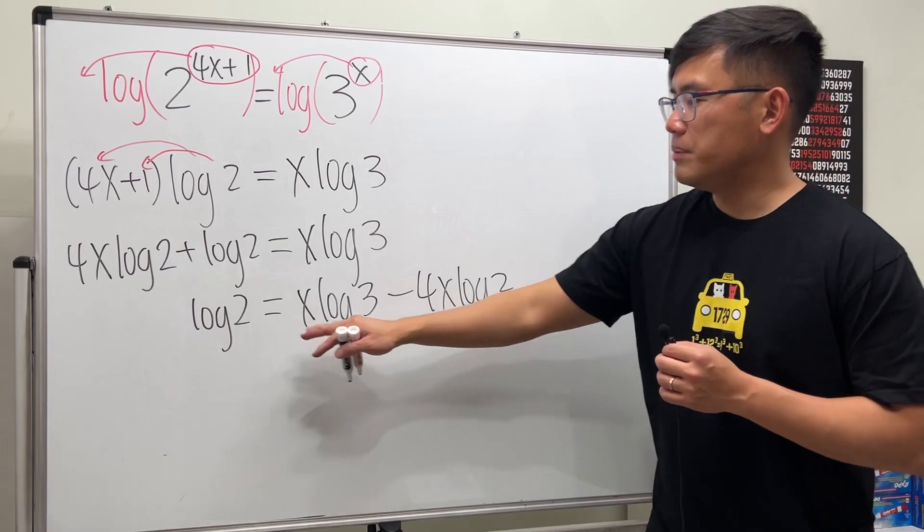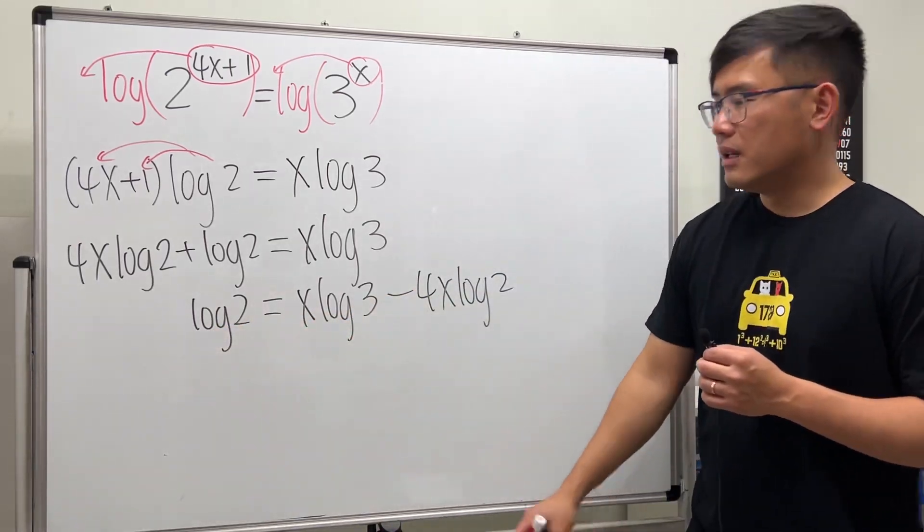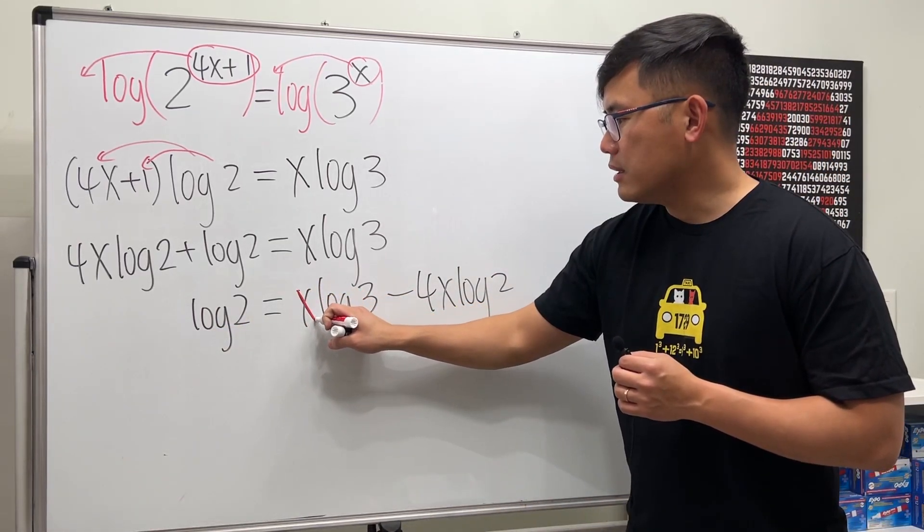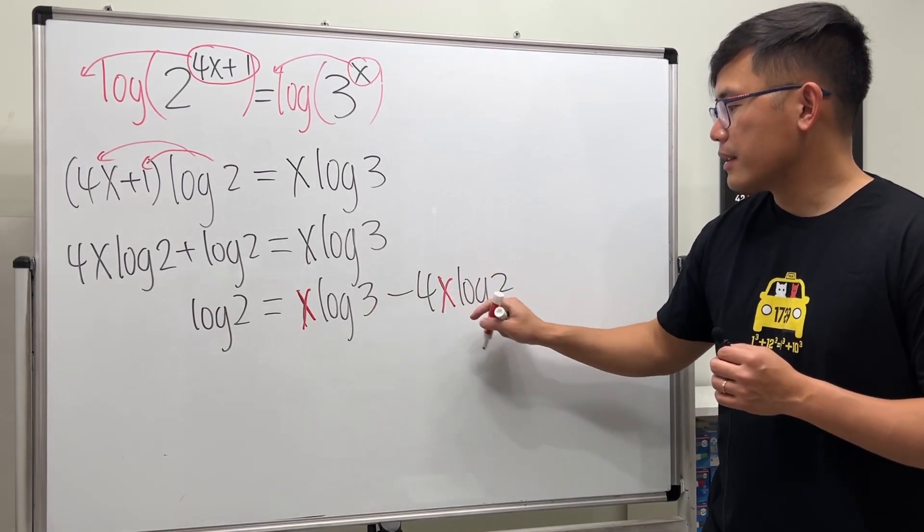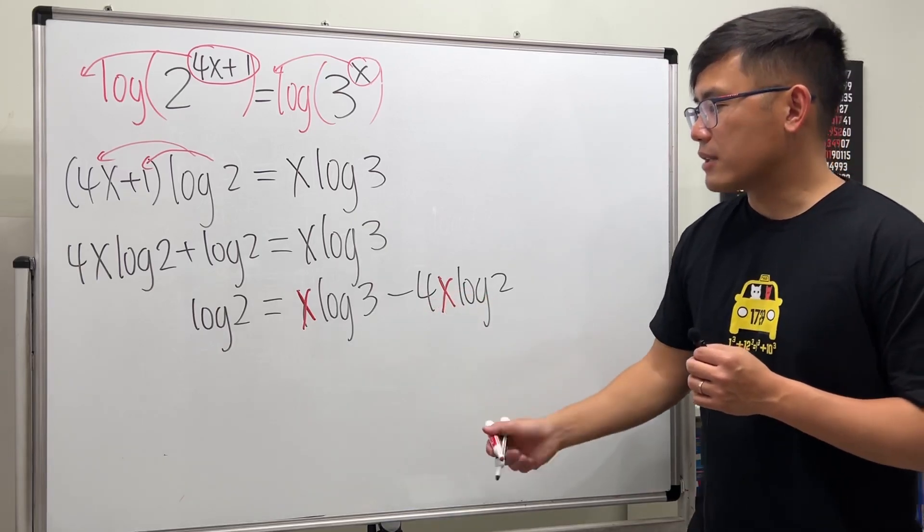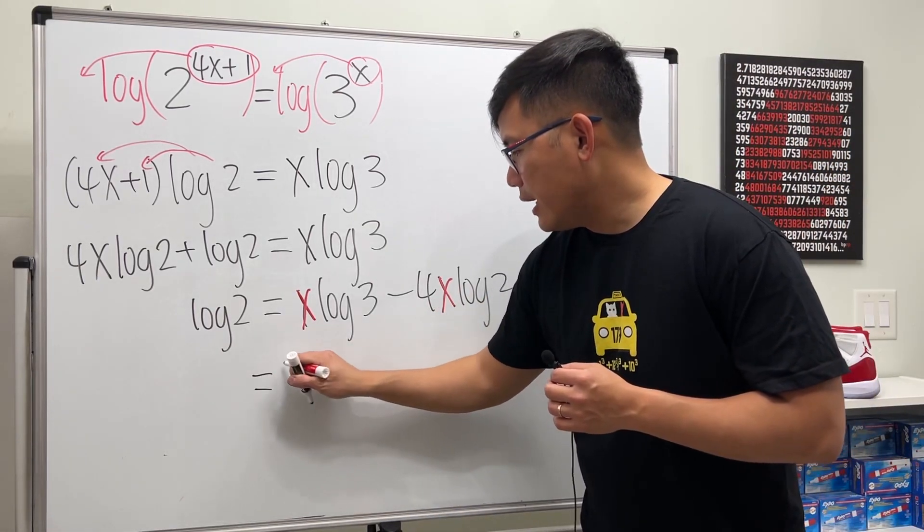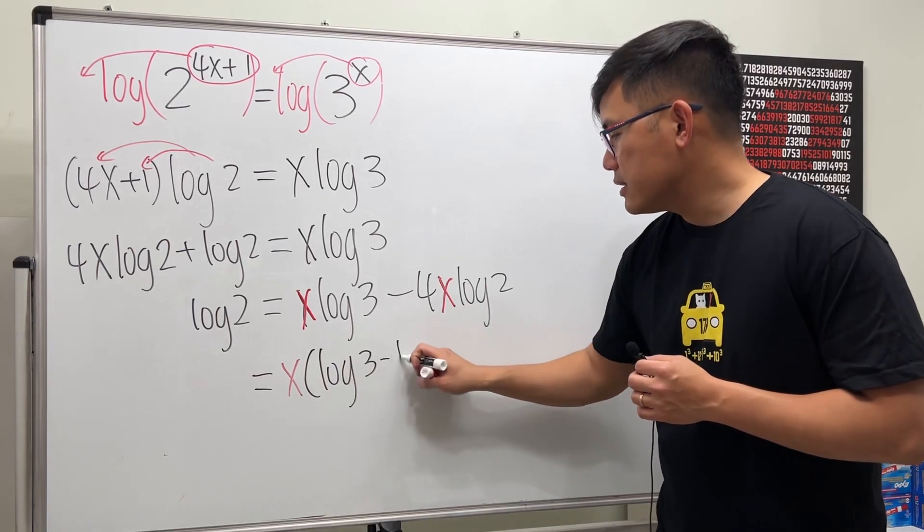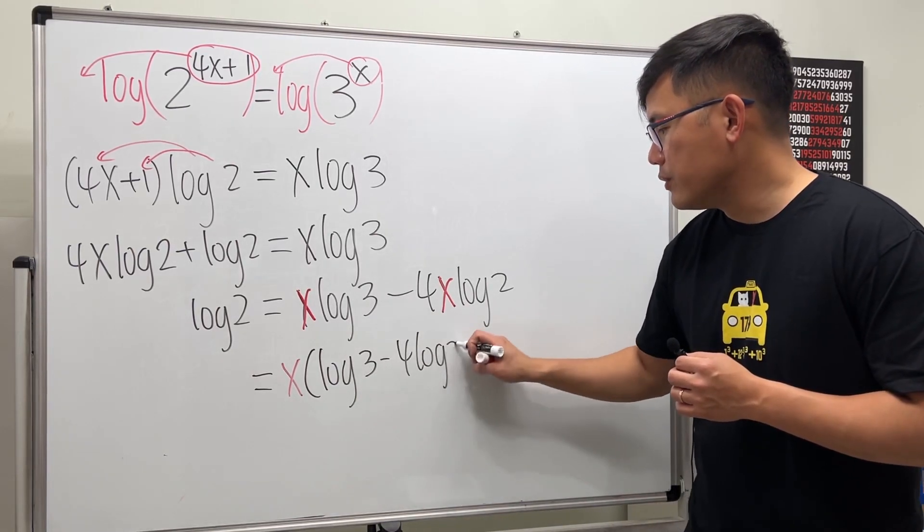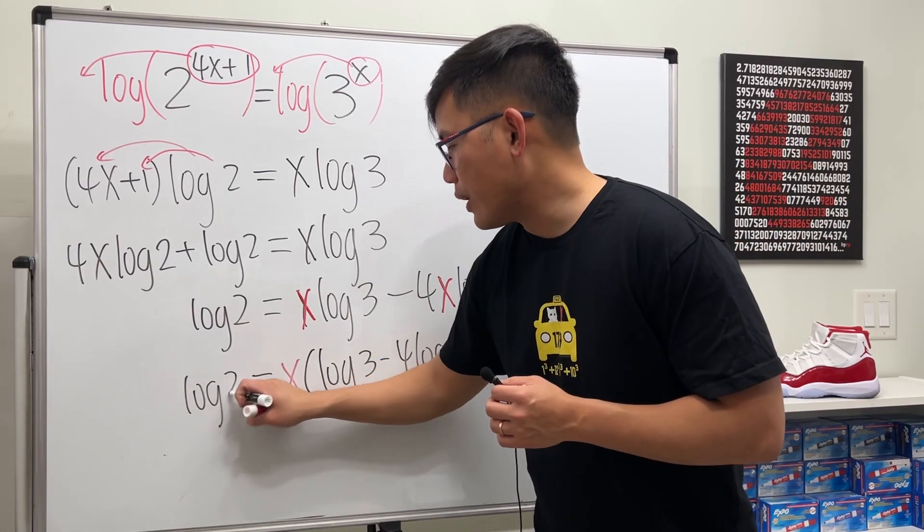This right here, we can keep this positive. And I think it's nicer. Now we have this x here times log of 3, minus 4 times this x here times log of 2. We can factor out the x. So we get x times log of 3 minus 4 log of 2, and that's equal to log of 2 right here.